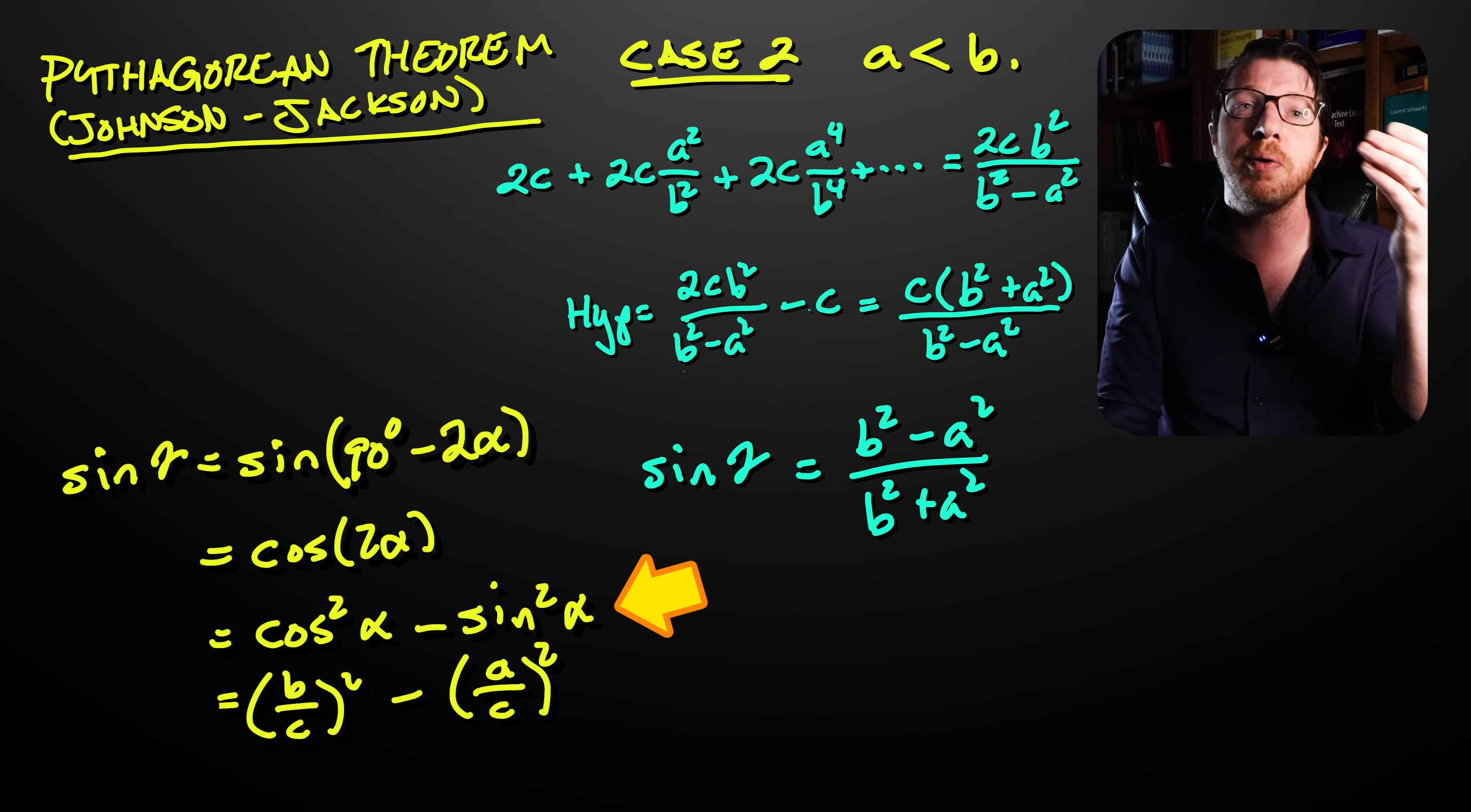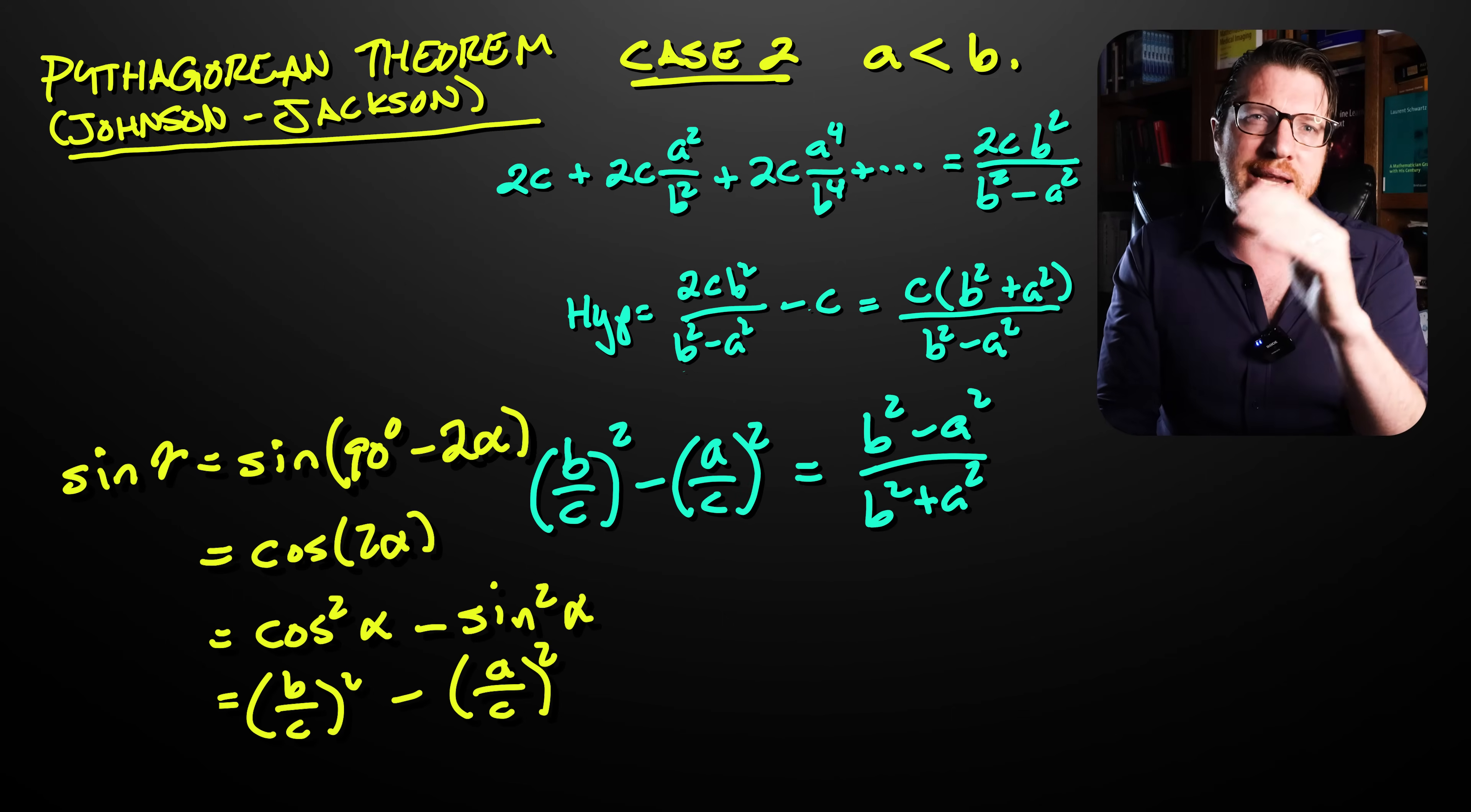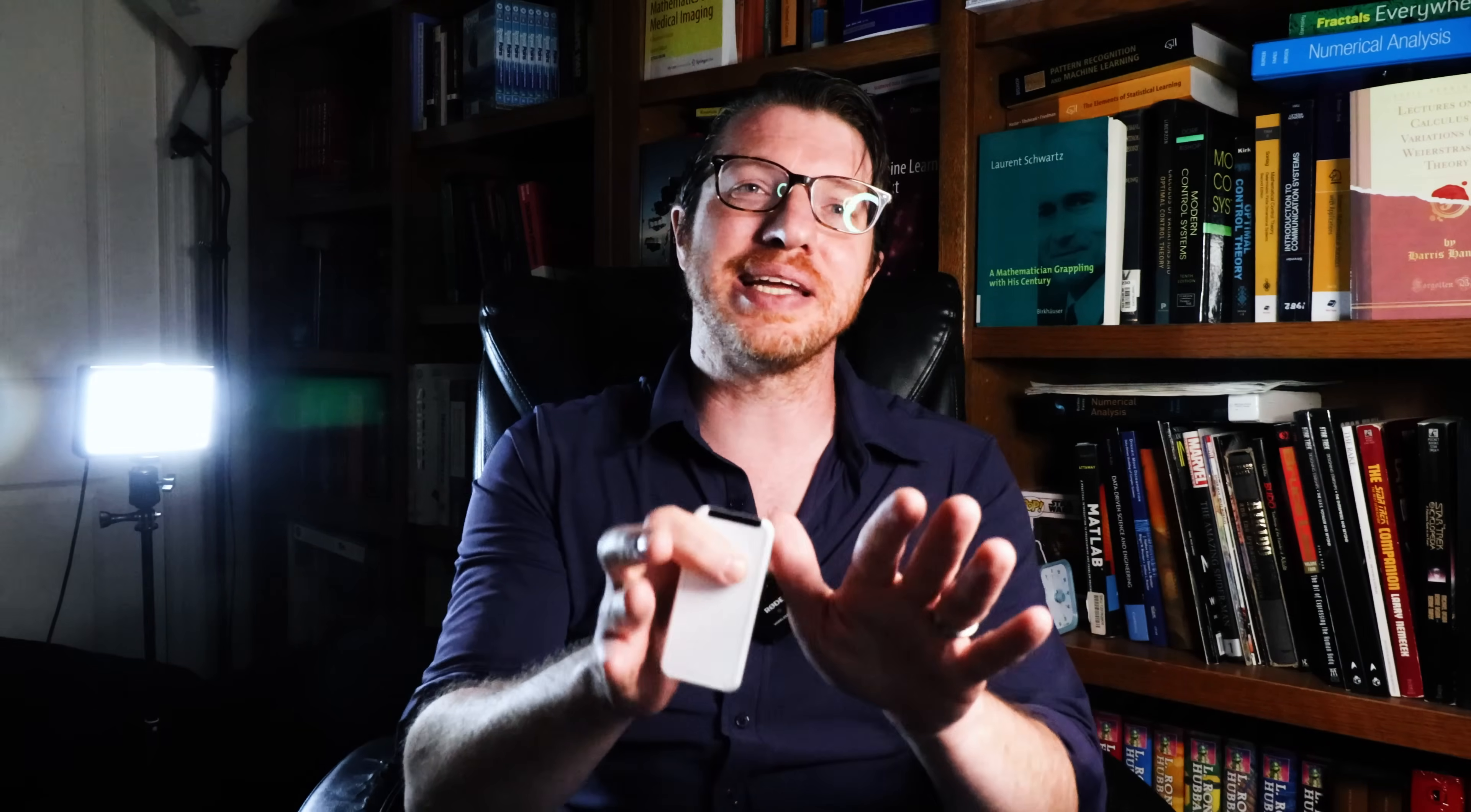Let's plug that in and start canceling. We have b squared minus a squared in the numerator of both sides. And after canceling and moving the c squared over, we are done. That is very slick. And I really want to congratulate Johnson and Jackson for coming up with this proof. I think that's a remarkable achievement for two kids who are just in high school. It really shows you that there are opportunities to discover something new everywhere in mathematics.